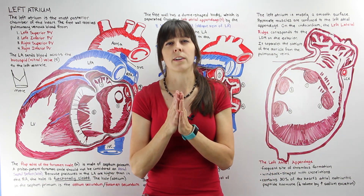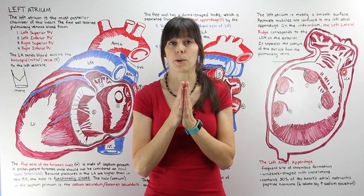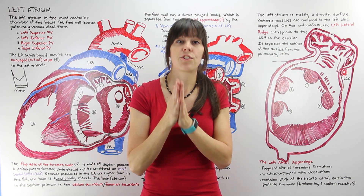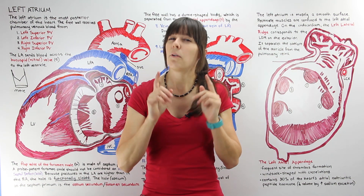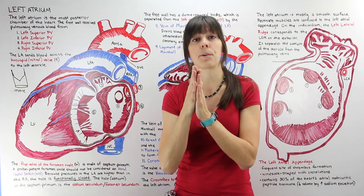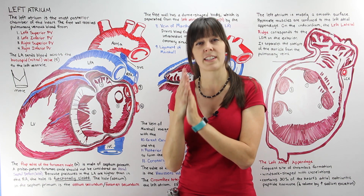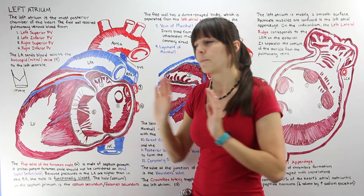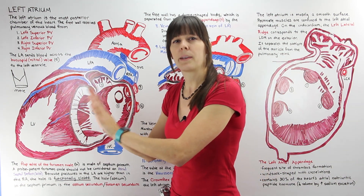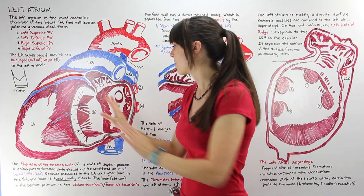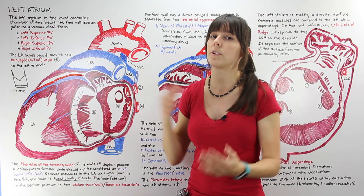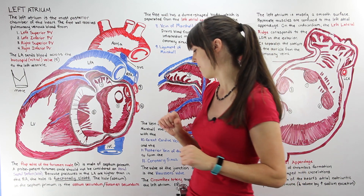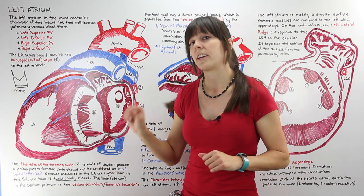I like to think of it like a door. The foramen ovale is supposed to be sealed shut in fetal development, meaning the septum primum and septum secundum fuse together. Sometimes they don't fuse, but because the left atrium has much higher pressures than the right atrium, it puts pressure on that wall, keeping it closed so that no blood flow is exchanged between the left and right atrium. So in this case, it would not be considered an atrial septal defect.